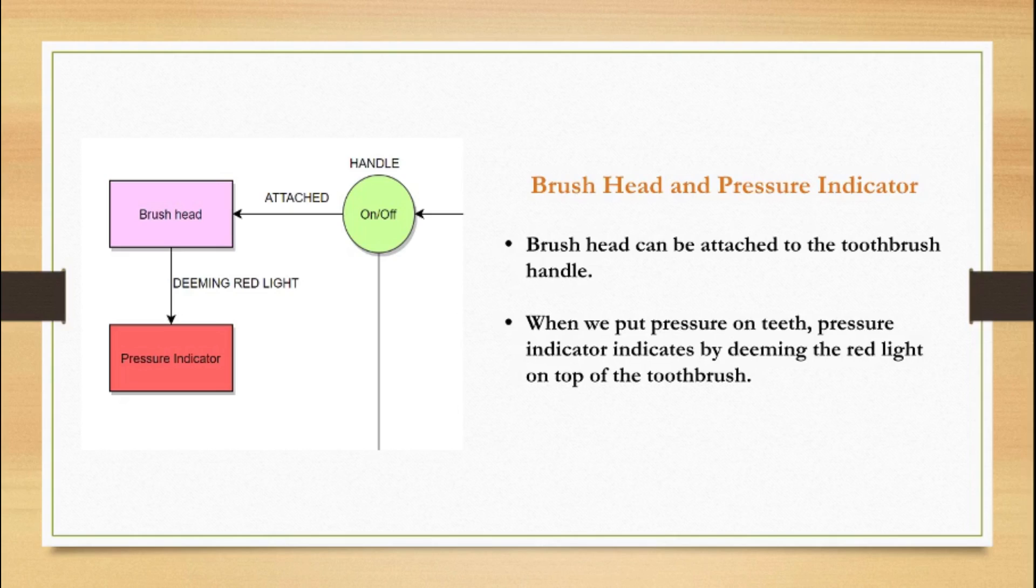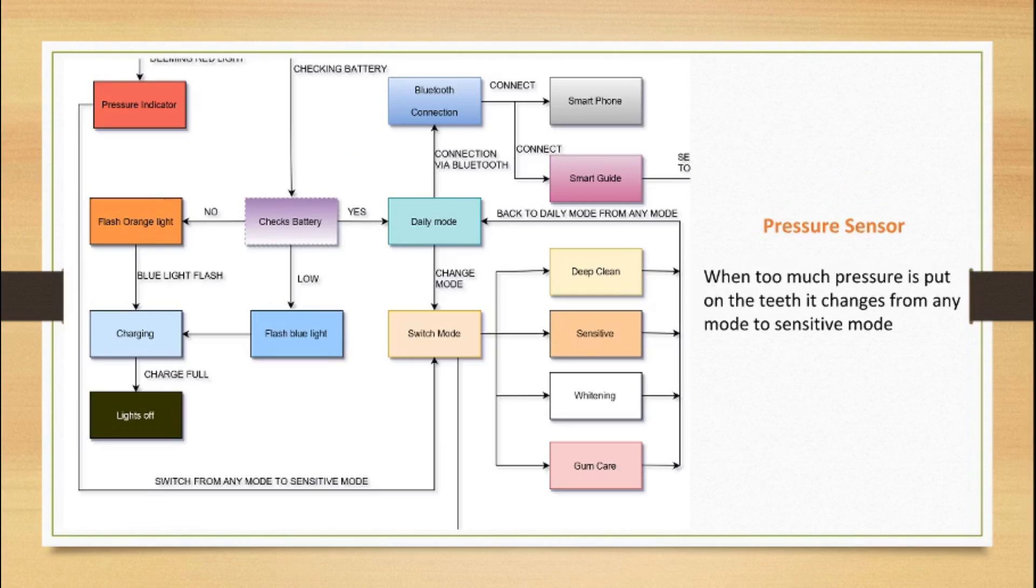Brush head can be attached to the toothbrush handle. If we put too much pressure on the teeth, it indicates by dimming the red light on top of the toothbrush. When the toothbrush detects the pressure by pressure sensor, it changes to sensitive mode from any other mode.